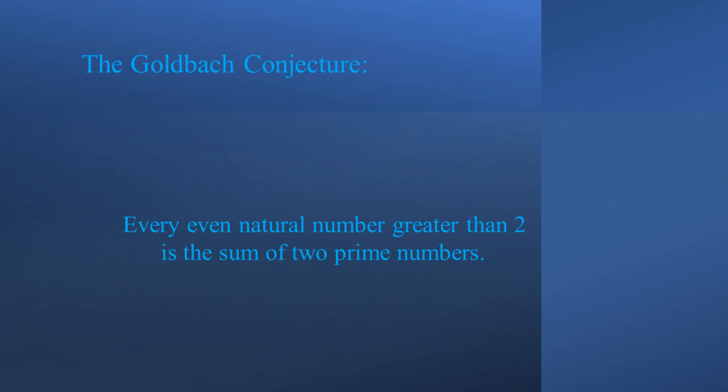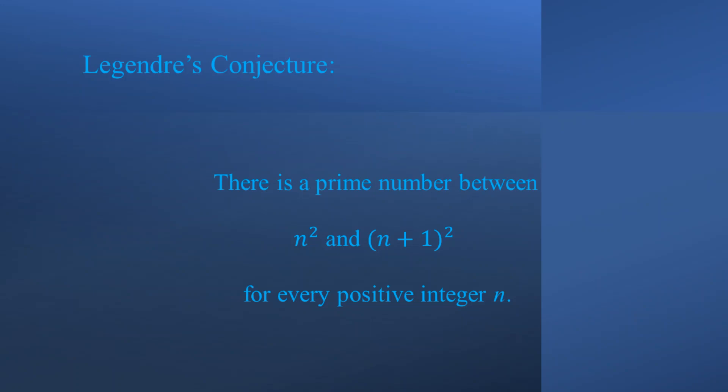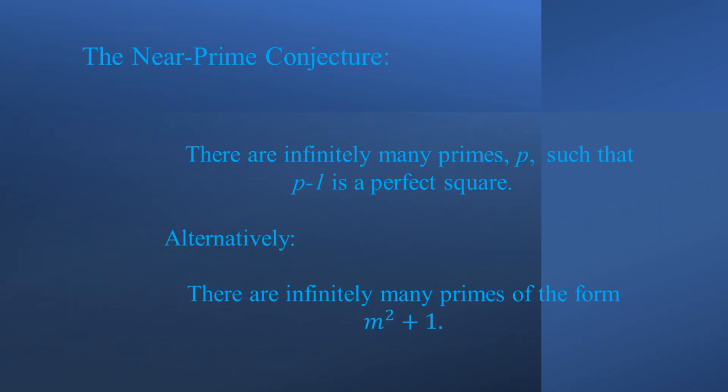They are as follows. The Goldbach conjecture: can every even integer greater than 2 be written as the sum of two primes? The twin prime conjecture: are there infinitely many primes p such that p plus 2 is prime? Legendre's conjecture: does there always exist at least one prime between consecutive perfect squares? The near prime conjecture: are there infinitely many primes p such that p minus 1 is a perfect square, or alternatively, are there infinitely many primes of the form m squared plus 1?